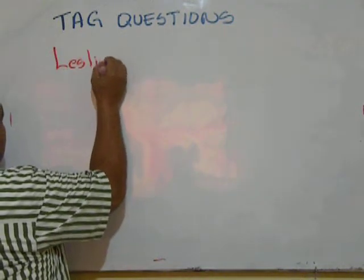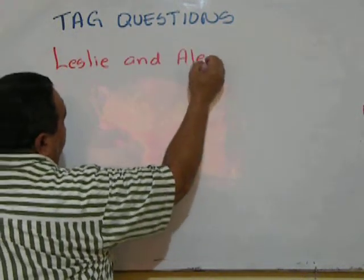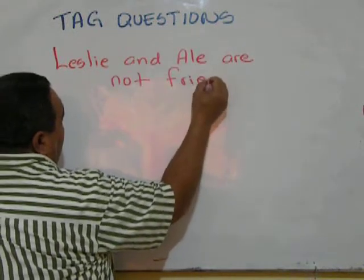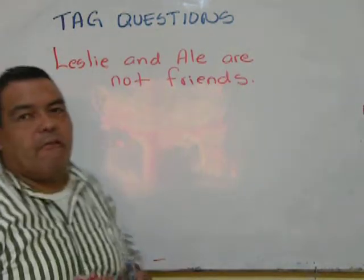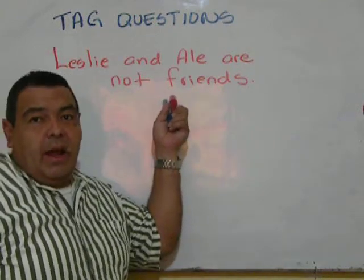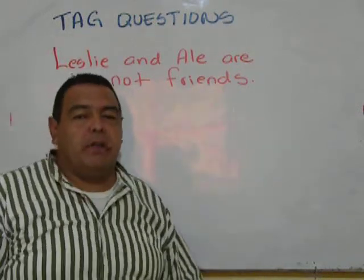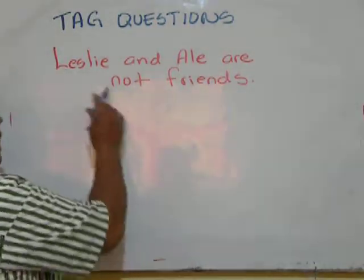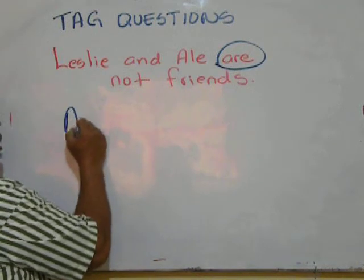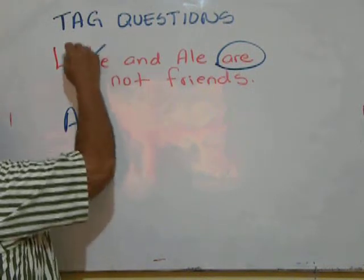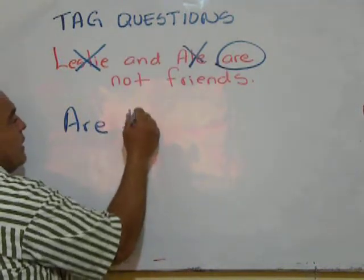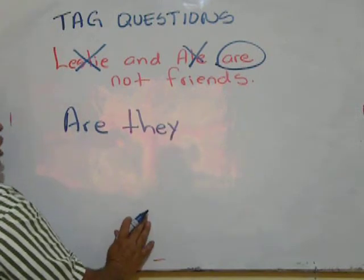Another example: 'Leslie and Ali are not friends.' I'm saying it in a negative way, so the tag question has to go in a positive way. I'm talking about a plural, so I have to use 'are' and replace Leslie and Ali with the pronoun 'they.' Leslie and Ali are not friends, are they?